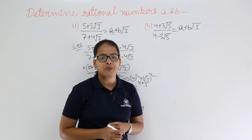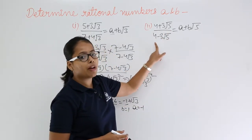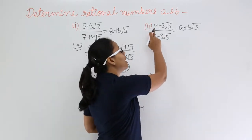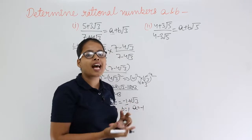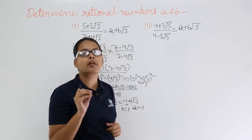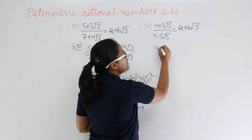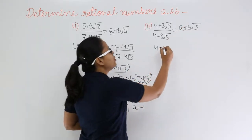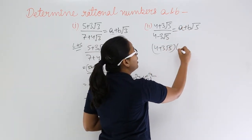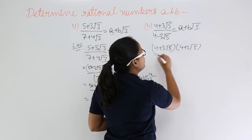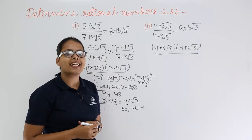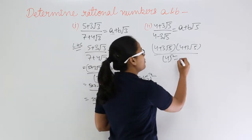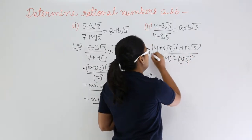Now let's move on to the second problem: (4 + 3√5) divided by (4 − 3√5). This is an easier problem because you can see that the numerator and denominator have the same terms in the form a+b and a−b. When you rationalize the denominator, you multiply by (4 + 3√5), so the numerator becomes (4 + 3√5)², and the denominator takes the form a² − b², where a = 4 and b = 3√5.